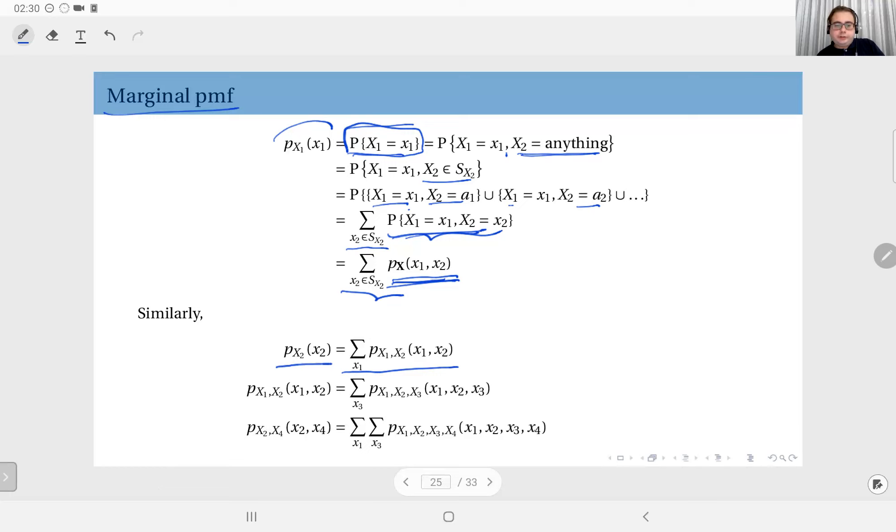In fact, I can generalize this to more dimensions. If you have a three-dimensional random vector, if you sum these PMF values over all possible values of x3, you get the joint distribution of x1 and x2. And in fact, if you just sum this three-component joint PMF with respect to all possible values of x1 and x3, what you get is the marginal PMF of x2.